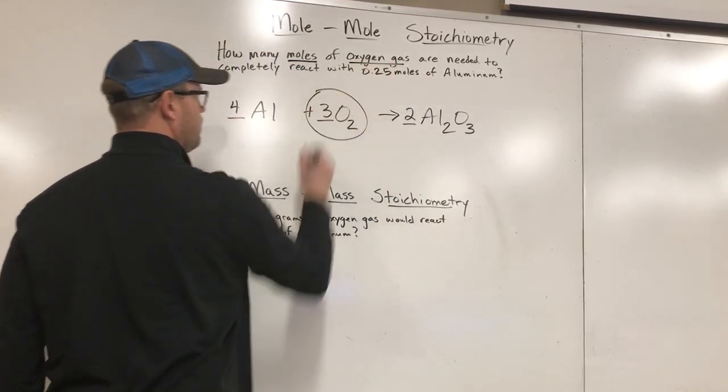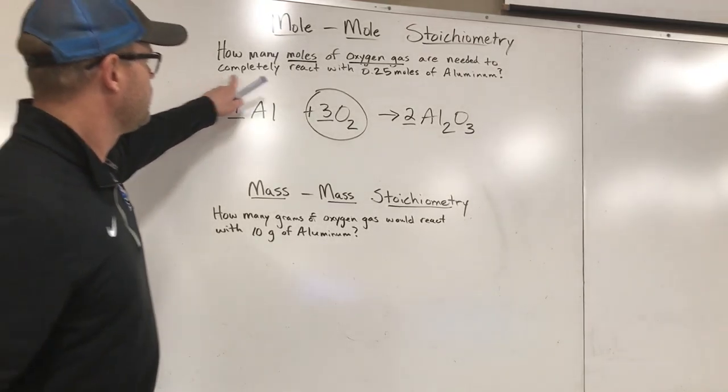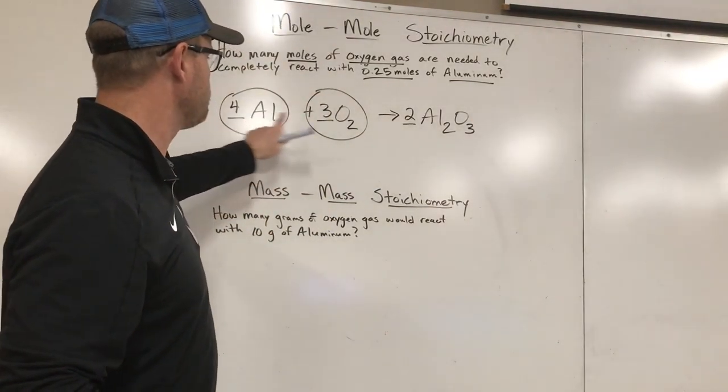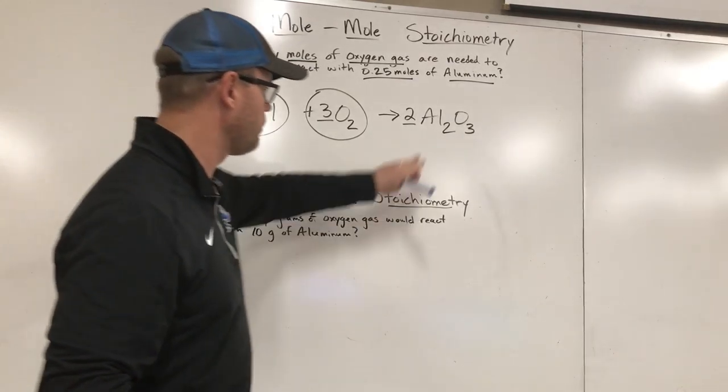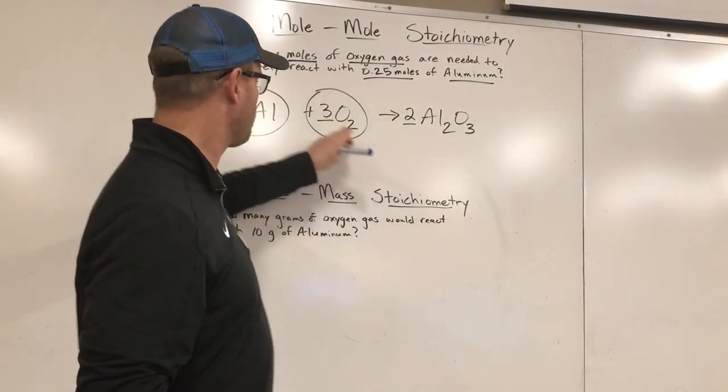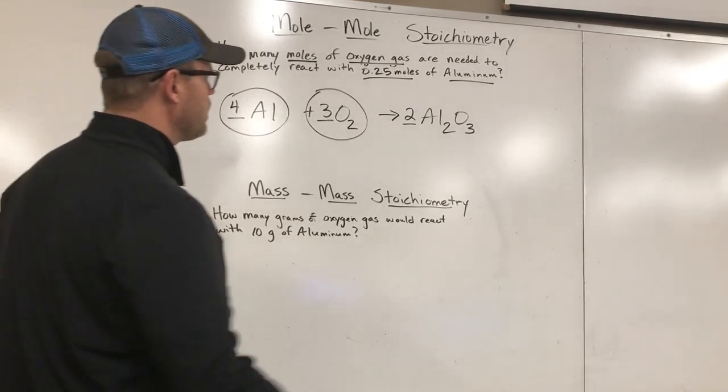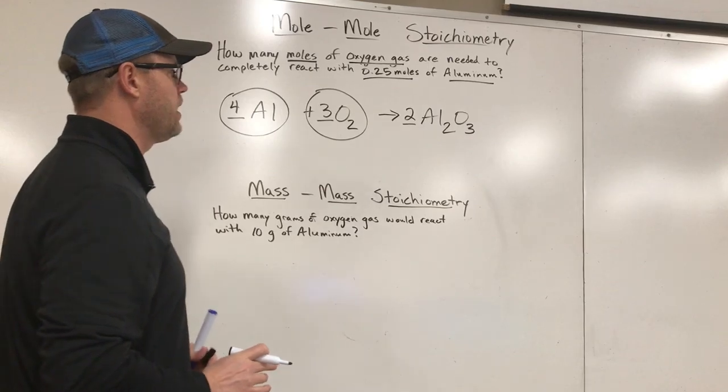And then we're going to try to compare that to 0.25 moles of aluminum, pure aluminum metal. It happens to be this one right here. So these are the two things we're looking at in this particular problem. We could also analyze the aluminum oxide, but it's important that you read a question and you pick out the two things you're actually trying to compare. The other stuff we're going to ignore for the moment.